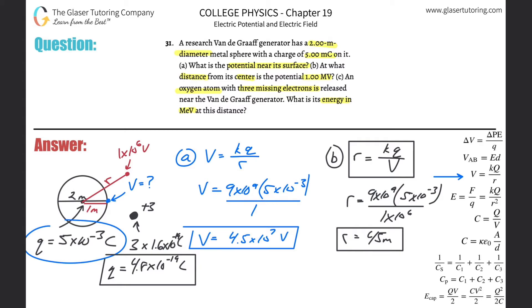Now what they want us to do is find the energy. It says it is released near the Van de Graaff generator, so I would have to assume - what does it mean by near? I'm going to assume they're meaning like right at its surface, basically. I know the potential already at that point because we calculated that before. And here's now the charge that we're trying to calculate the energy of. What is its energy? The oxygen atom's energy.